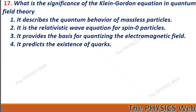Next: what is the significance of the Klein-Gordon equation in quantum field theory? We have seen the Dirac equation is for spin-half particles and the Klein-Gordon equation is for spin-zero particles. So, it is the relativistic wave equation for spin-zero particles. Two is your correct option.